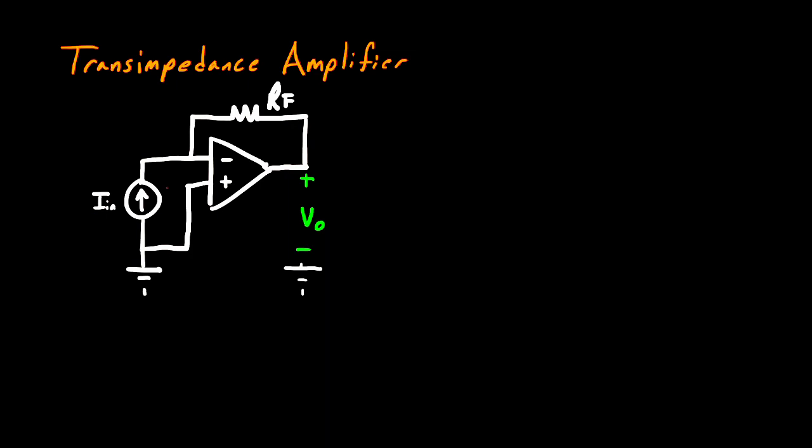We'll begin as we always do and label our component currents or node voltages, but in this case, our only current is going to be In, because we know that no current's going into our op-amp, so In has to continue around through Rf. So this is going to be In.